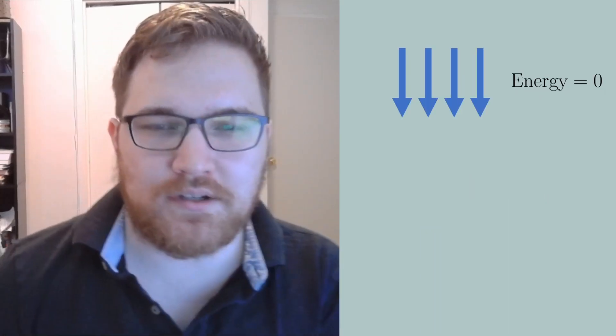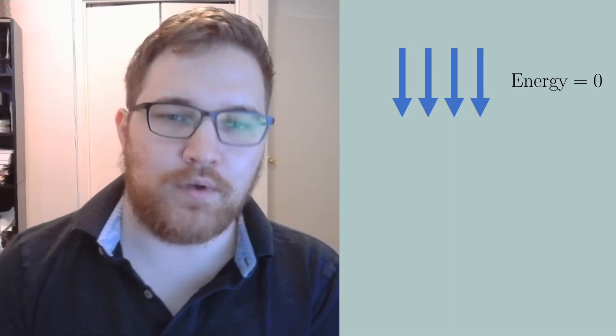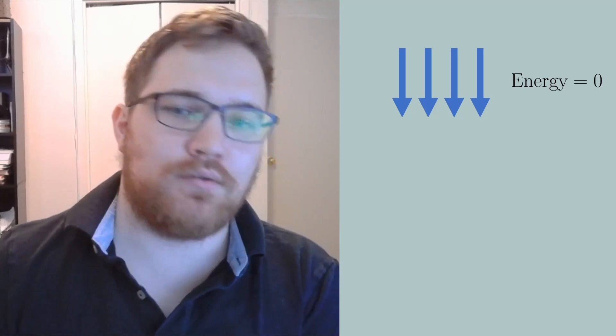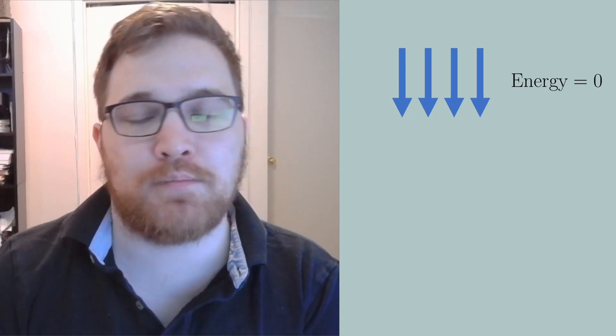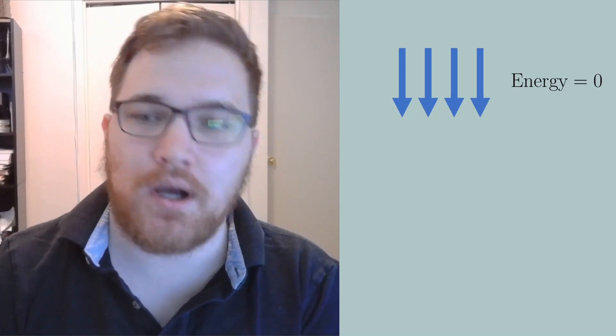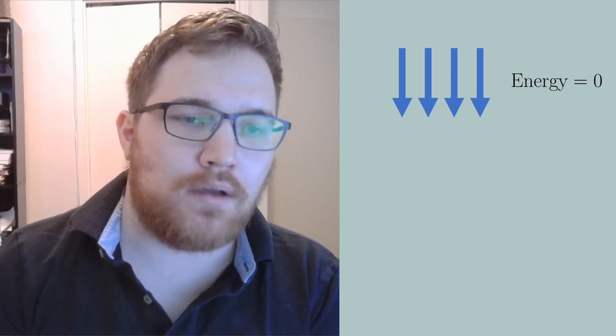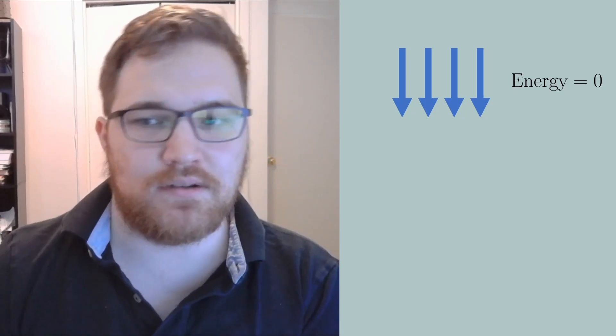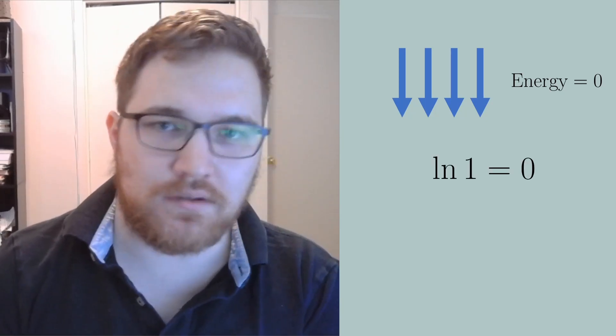Perhaps you can already see where this is going. Let us consider an example system with four spins. If we think about the lowest energy microstate, we see that it is simply all spins being down, corresponding to a total energy of zero. Interestingly here, this is the only way we can have all of the spins be down, so the entropy is zero since the logarithm of one is zero.